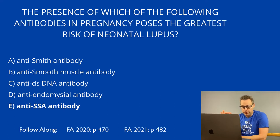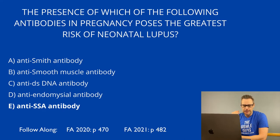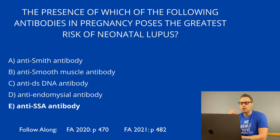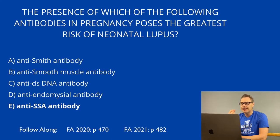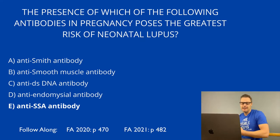Another condition to review is antiphospholipid syndrome — an autoimmune disorder characterized by blood clots, miscarriages, rash, chronic headaches, seizure, and dementia. This is often seen in those with SLE. An important tested concept is that anti-cardiolipin antibodies seen in this condition can cause a false positive VDRL/RPR. Other lab findings include the presence of lupus anticoagulant, anti-cardiolipin, and anti-beta-2 glycoprotein-1 antibodies. The lupus anticoagulant causes PTT prolongation that doesn't get corrected when platelet-free plasma is added.